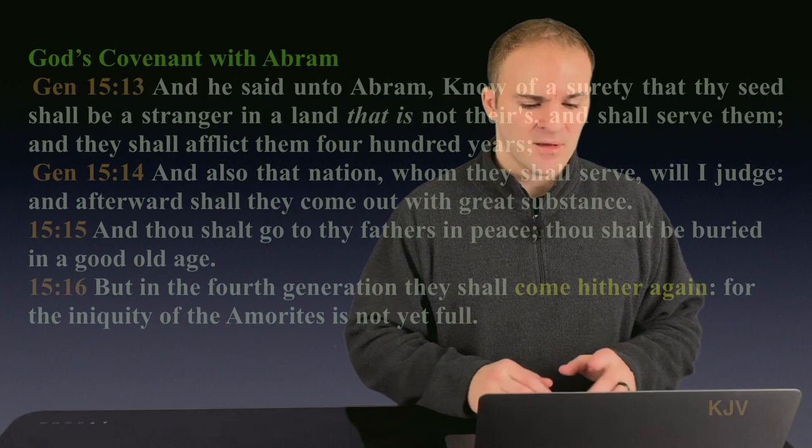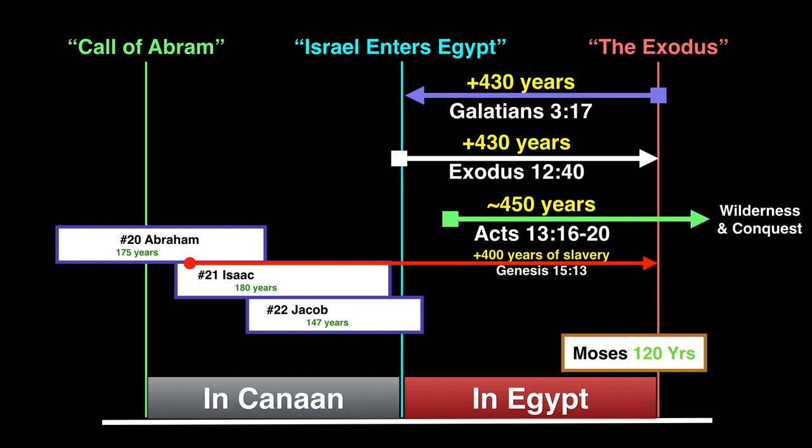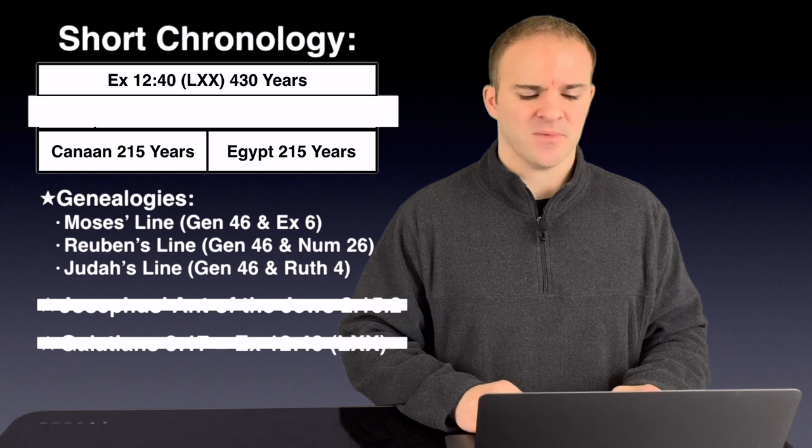Notice God said that they would return back to Canaan. This whole 400 years is talking about a single nation that would be doing the afflicting and forcing them into bondage, not two. So the 400 years has to be moved ahead into the time of Egypt as they do fit the bill for all the descriptions laid out in Genesis 15. So the shorter chronology has a lot of textual problems.